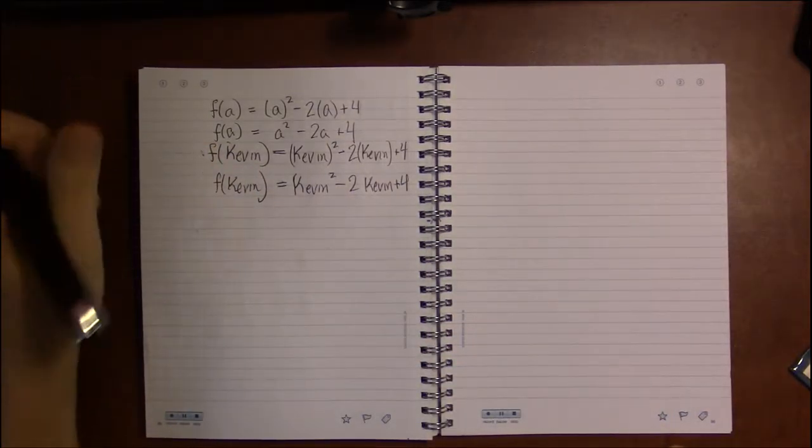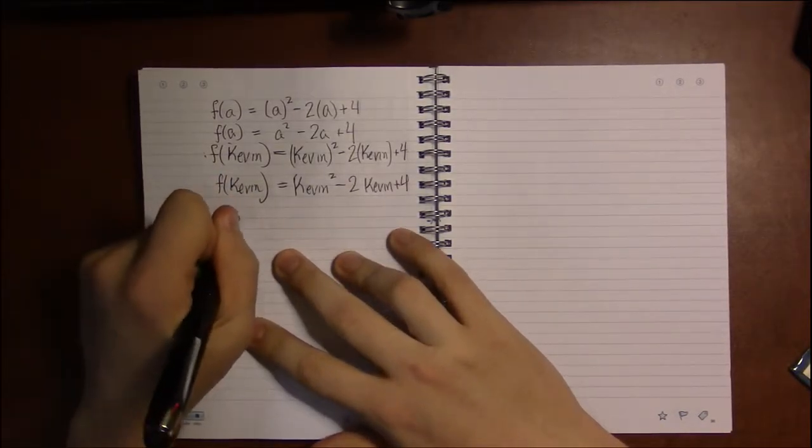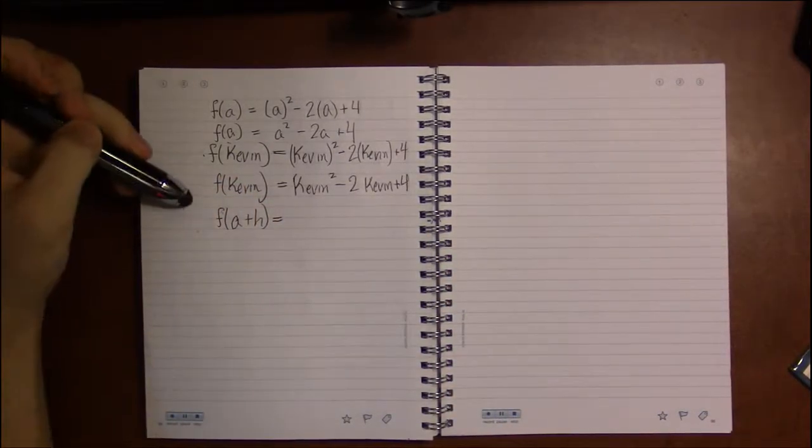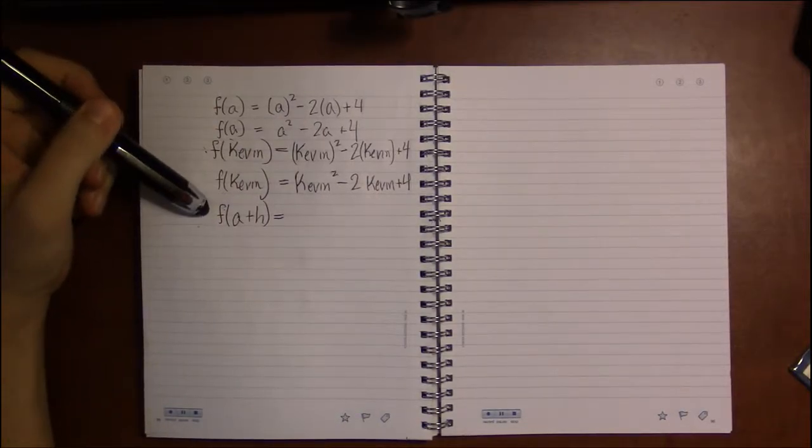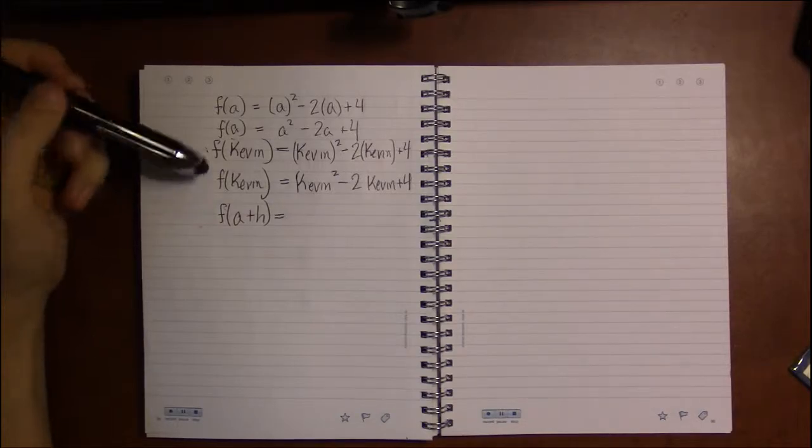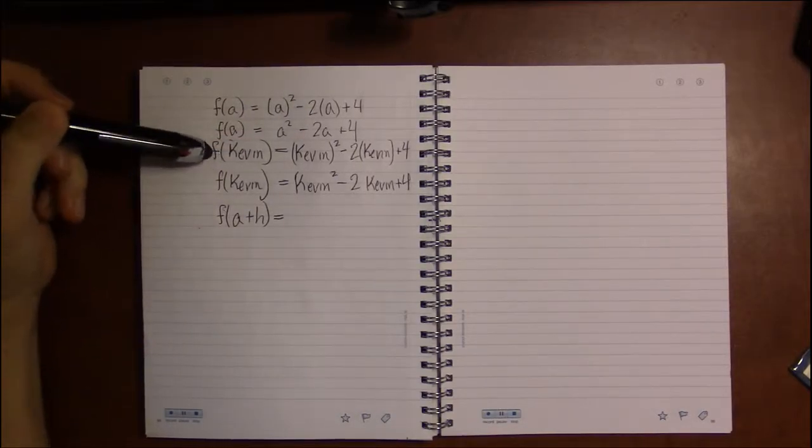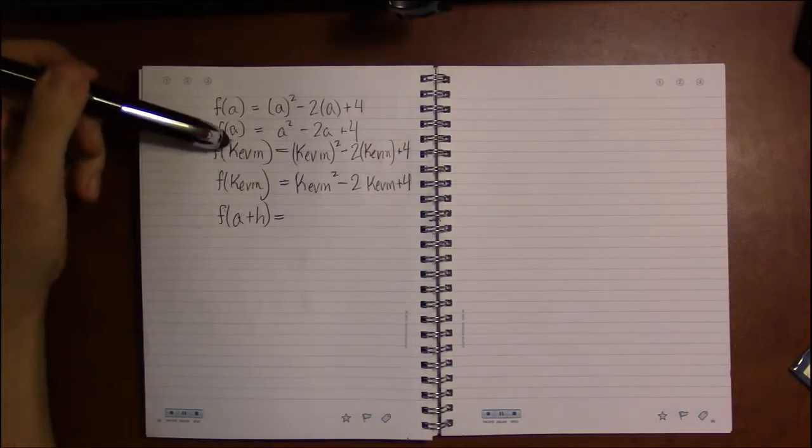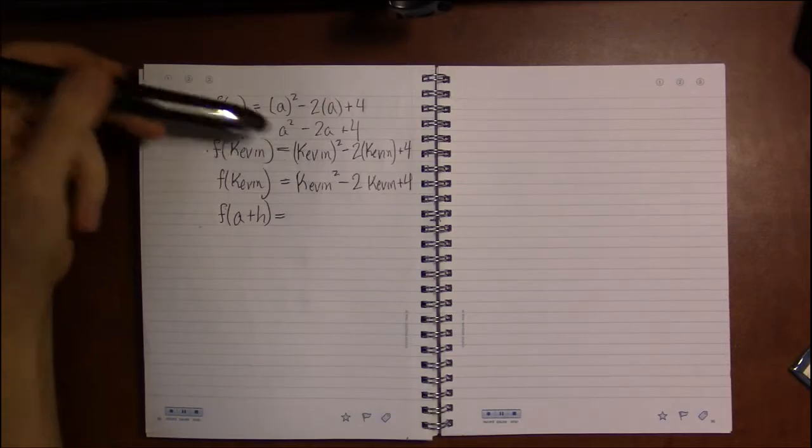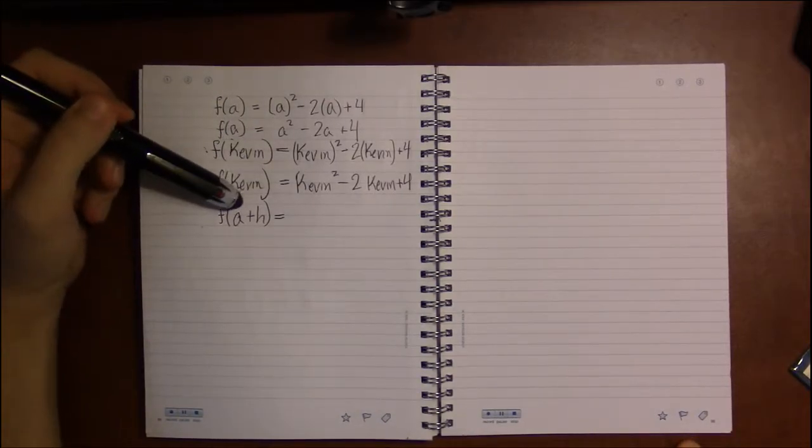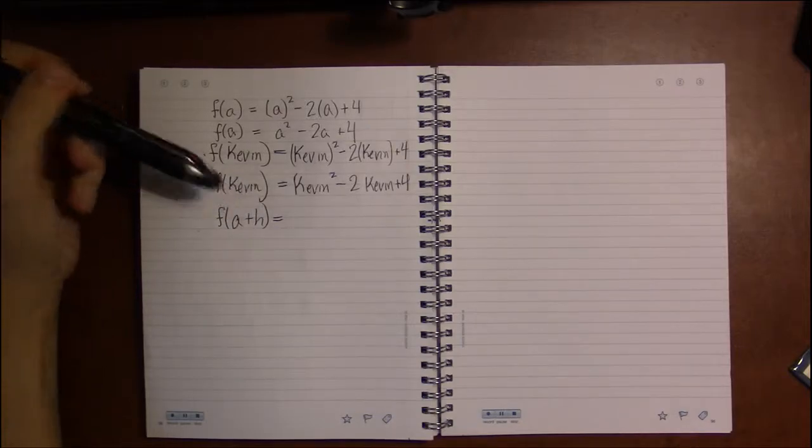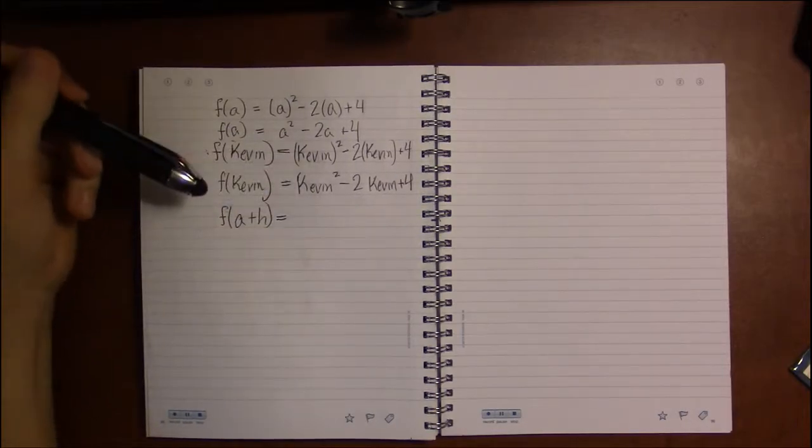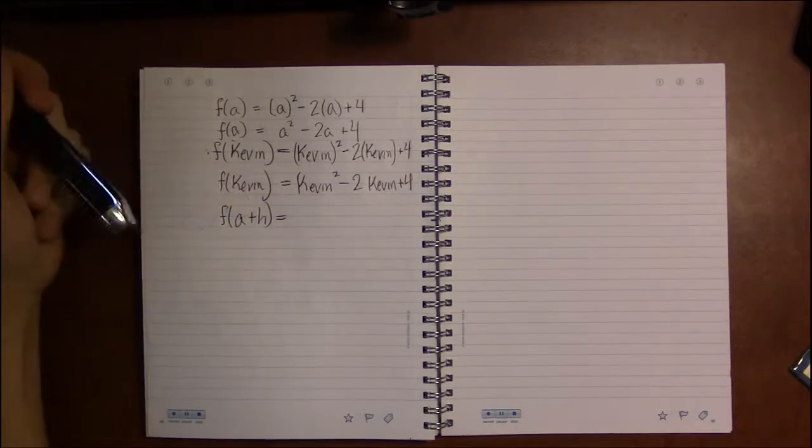I do this absurd example because this trips everyone up. It's a common problem for college algebra students. But it really shouldn't be, because if you can follow this absurd example where x equals Kevin, you should be able to follow this. All I'm doing here is putting in a bunch of letters that happen to spell out a common English name. Here, I've got a bunch of characters that spell out a common mathematical phrase. There's really no difference between these two. But for whatever reason, this always trips people up.